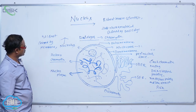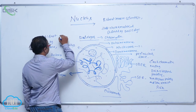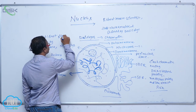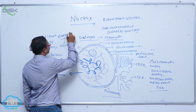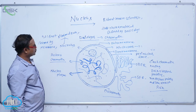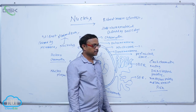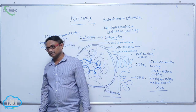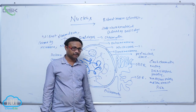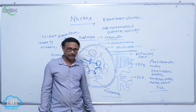The nucleolus is made up of ribosomal RNA and is involved in the synthesis of ribosomes. These ribosomes are involved in protein synthesis. The number of nucleoli varies — cells that are actively involved in protein synthesis have more nucleoli than other cells.